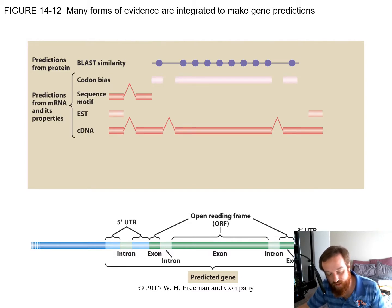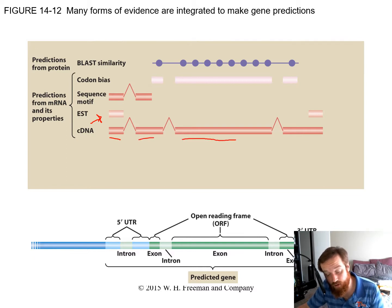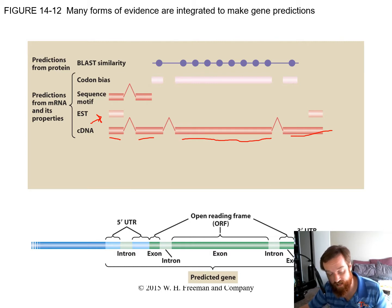We can also look at all previously predicted genes across different organisms, because common descent means we would share similar genes. Another prediction tool involves sequence motifs. ESTs — expressed sequence tags — are similar to cDNA and, along with cDNA libraries, help us determine what are introns and exons.